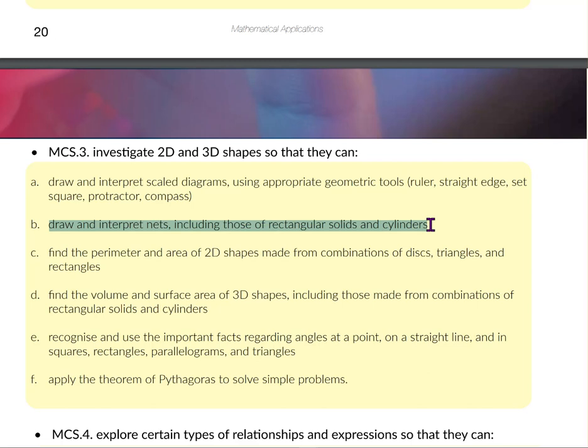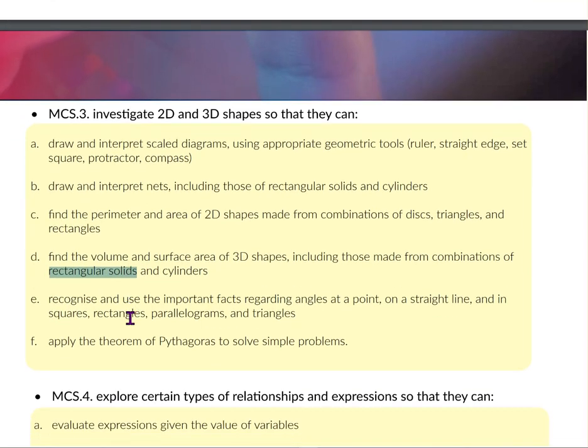Find the perimeter and area of 2D shapes: discs (that's a circle essentially), triangles - base by perpendicular height is your calculation - and rectangles. You'll have side plus side, length plus length plus breadth plus breadth for your perimeter, and length by breadth for your area. What 3D shapes do we need to be worried about? Rectangular solids, which is like a box, and cylinders. There it is in two phrases: cylinders and rectangular boxes. Very simple rectangular solids.